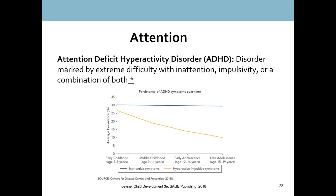ADHD is a disorder marked by extreme difficulty with inattention, impulsivity, or a combination of both. There are three subtypes: some people have mainly inattention, others mainly impulsivity or hyperactivity, and the most common is having both. About 5% of children are diagnosed with ADHD, and boys are twice as likely as girls to receive the diagnosis.